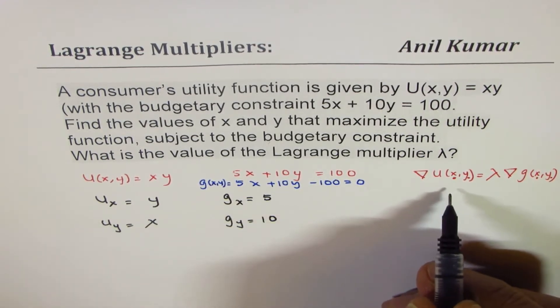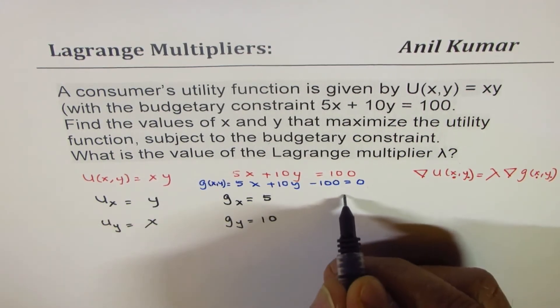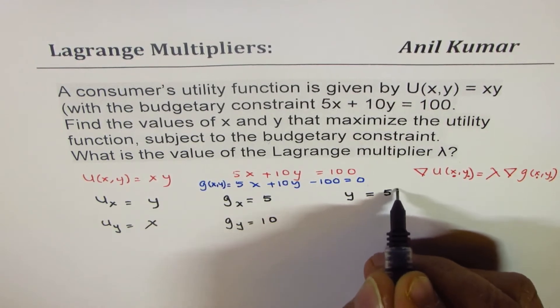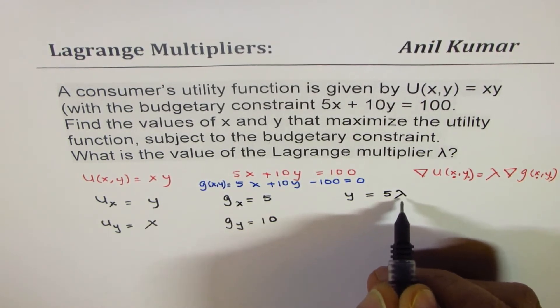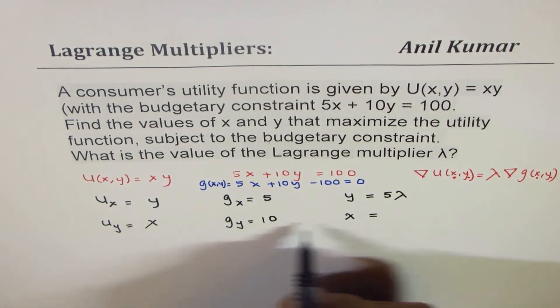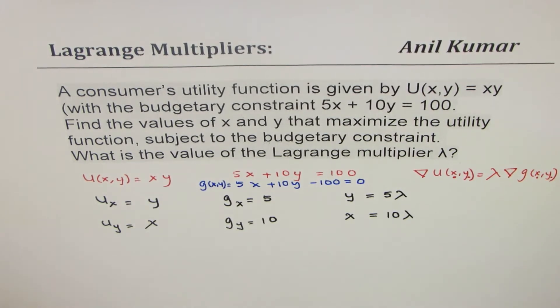Now, you can write the Lagrange multiplier equation as y equals 5 times lambda, where lambda is the Lagrange multiplier. And x equals 10 times lambda. So we get these two equations to solve.